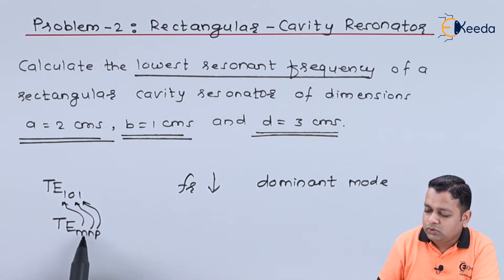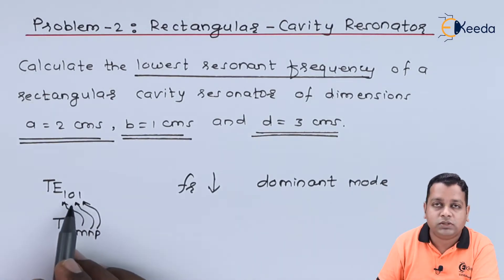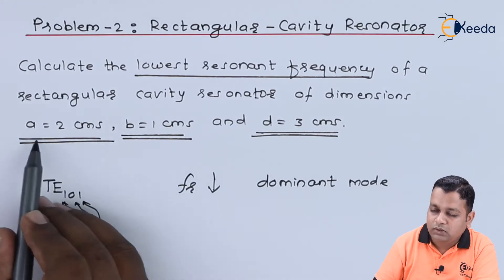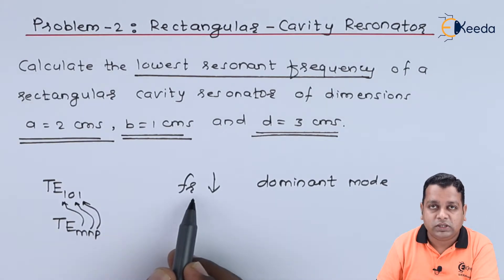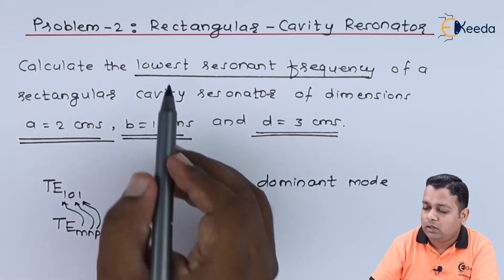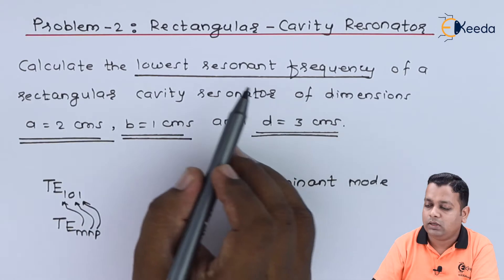Let us have the substitutions of m-n-p equals 1-0-1 along with the dimensions to be substituted for the formula of resonant frequency, and it will be the lowest value for the device.